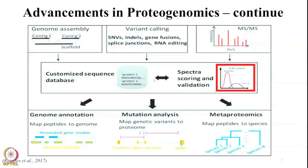Now we know about the gene sequence, RNA sequence, and proteome data. We can use all this information for various purposes like genome annotation, where we can map the peptides on the genome; mutation analysis, where it will tell us about all possible mutations leading to a particular clinical condition like malaria, cancer, or any other disease; and also for metaproteomics.